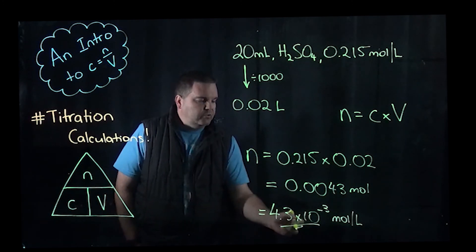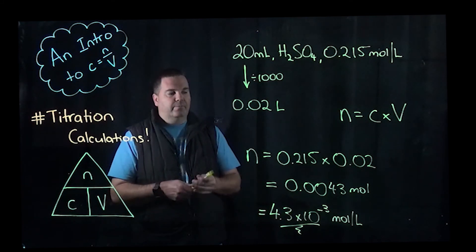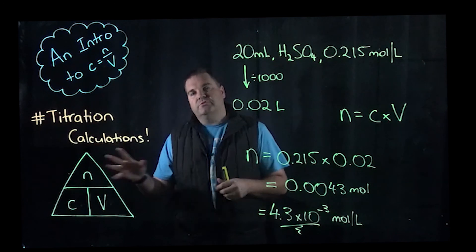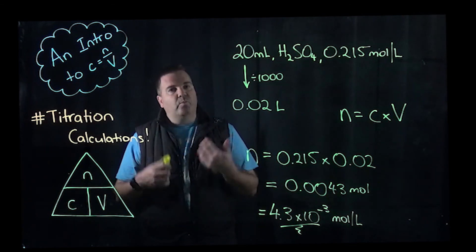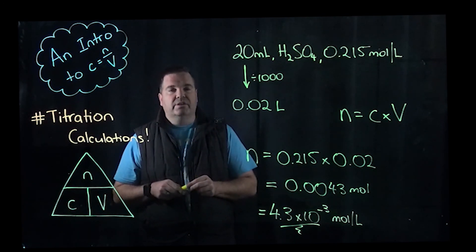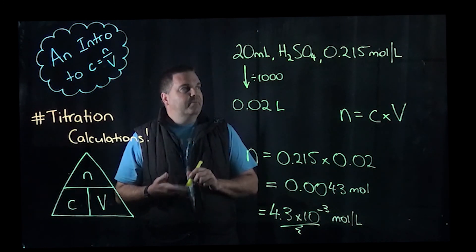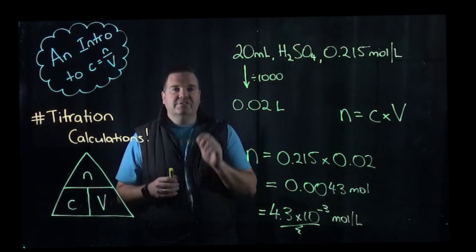So this is how you use the triangle to calculate number of moles. So if you can do those calculations, if you can calculate number of moles, concentration or volume, just following this initially to begin with, then when we actually get into titrations and you're doing calculations, you'll be much better placed. Hope this has been helpful for you. As always, if you've got any questions, just ask. Thanks guys.